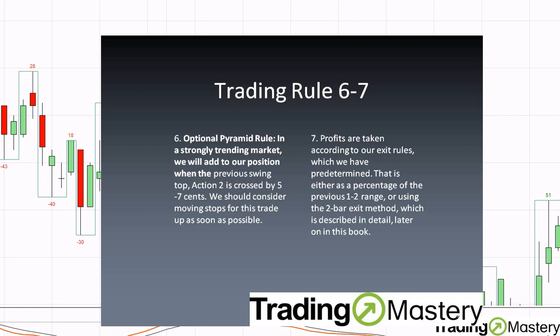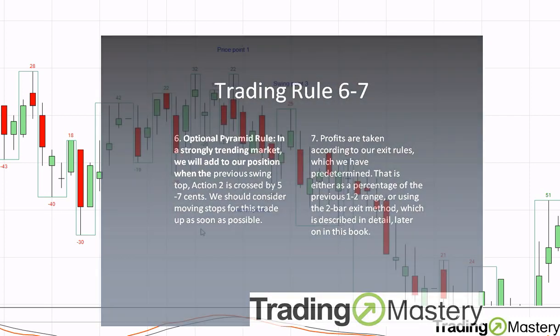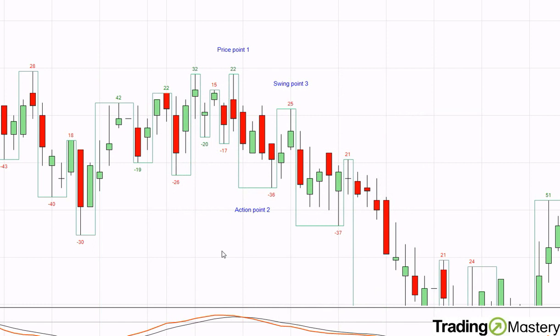Trading rule 7: profits are taken according to our exit rules, which we have predetermined. That is either as a percentage of the previous range or using a 2-bar exit method, which to begin with is absolutely our preference.